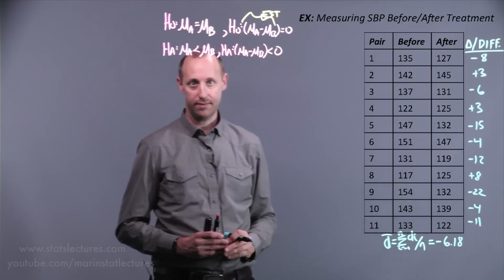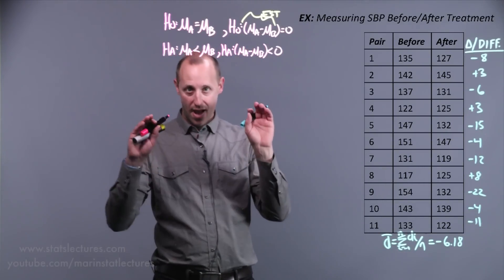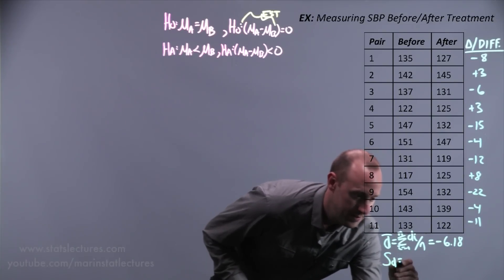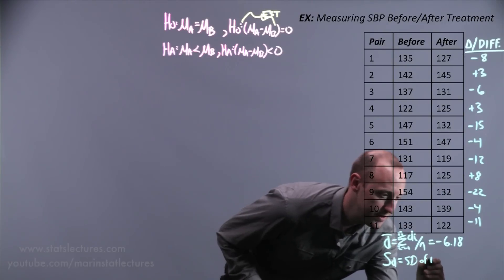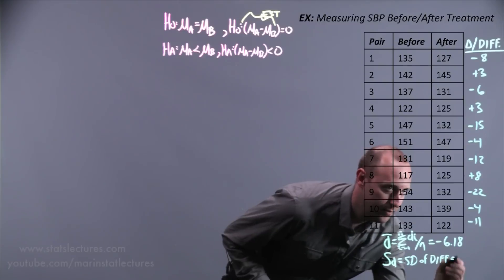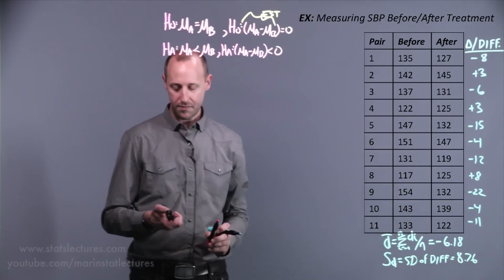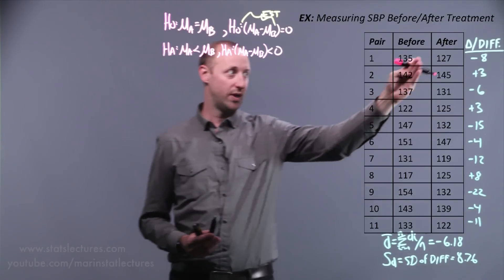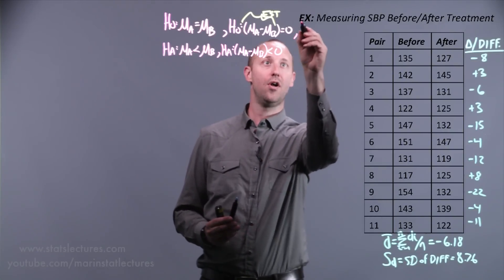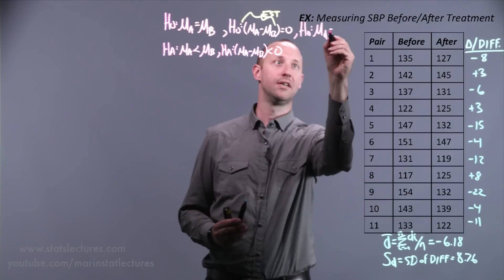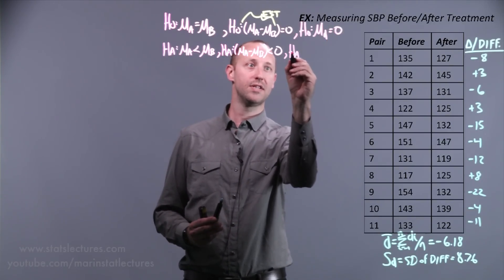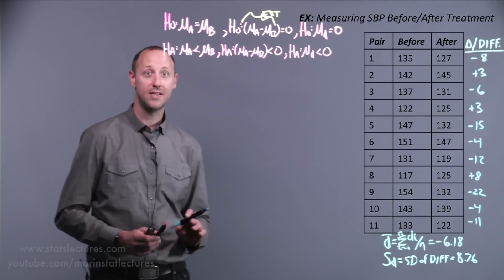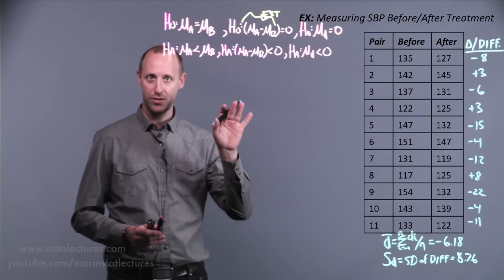We can also calculate the standard deviation of the differences — labeled s_d — which tells us on average how far the individual differences are from the mean difference. That comes out to 8.76. Rather than comparing mean after to mean before directly, we can express the null hypothesis as: the mean difference equals 0, with the alternative hypothesis that the mean difference is less than 0, meaning on average there was a decrease. We're now in the case of the one-sample t-test and can use the exact same approaches.